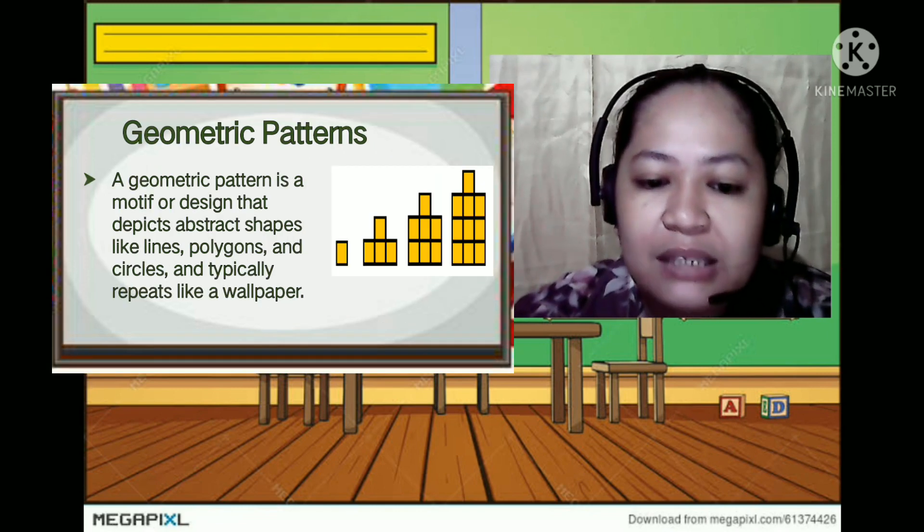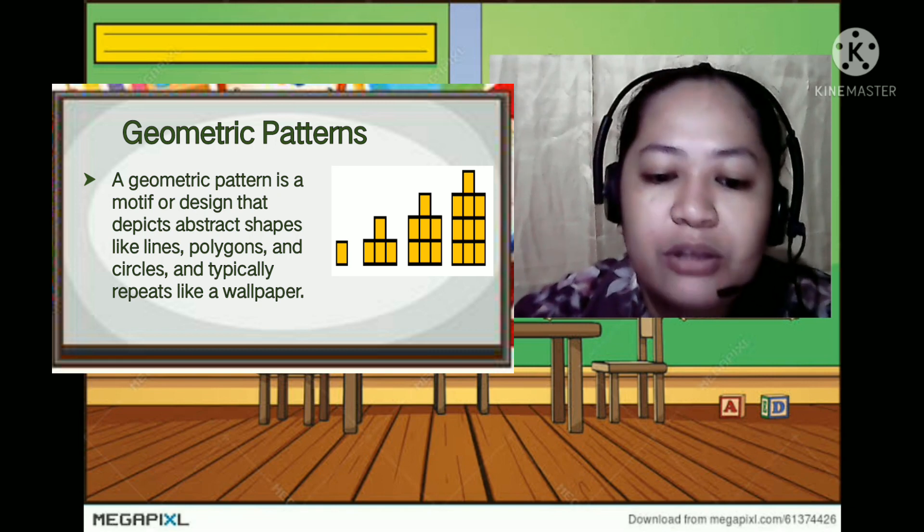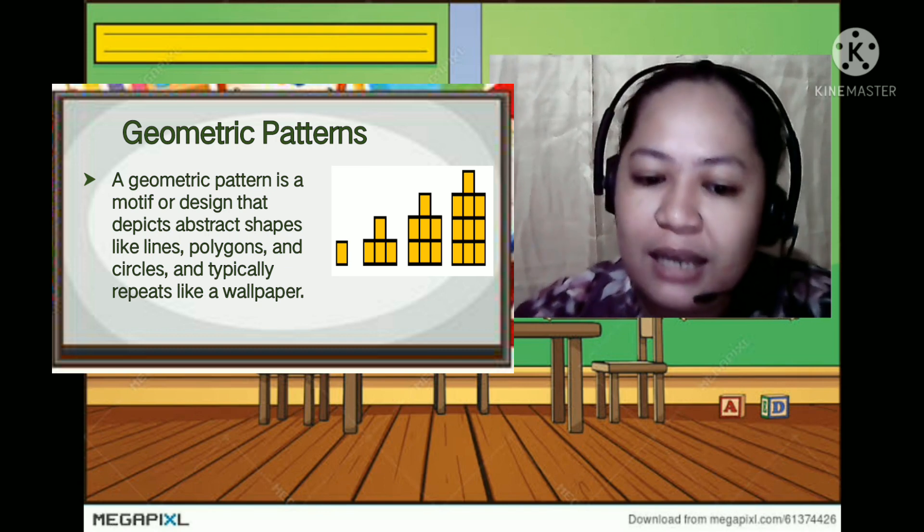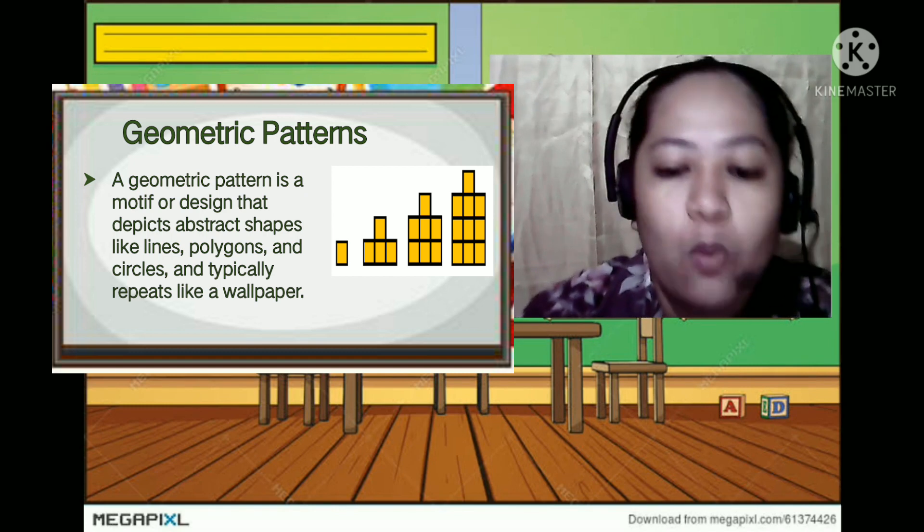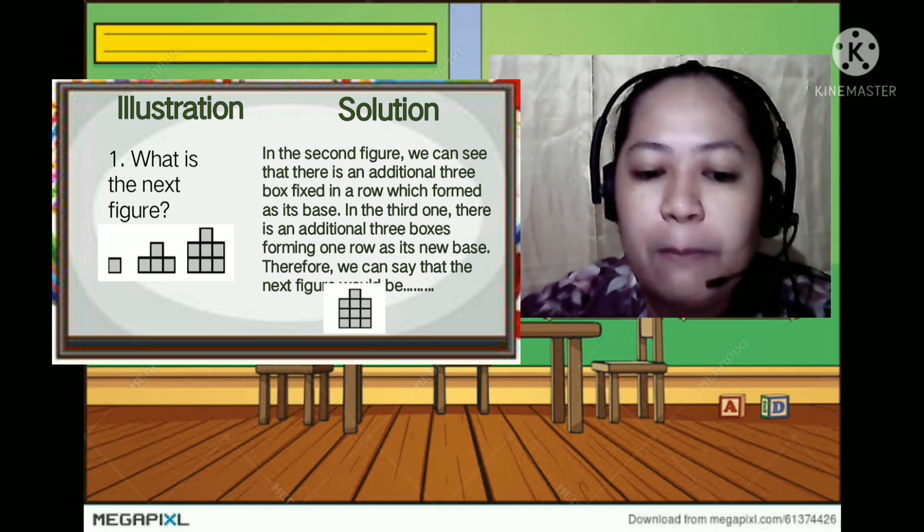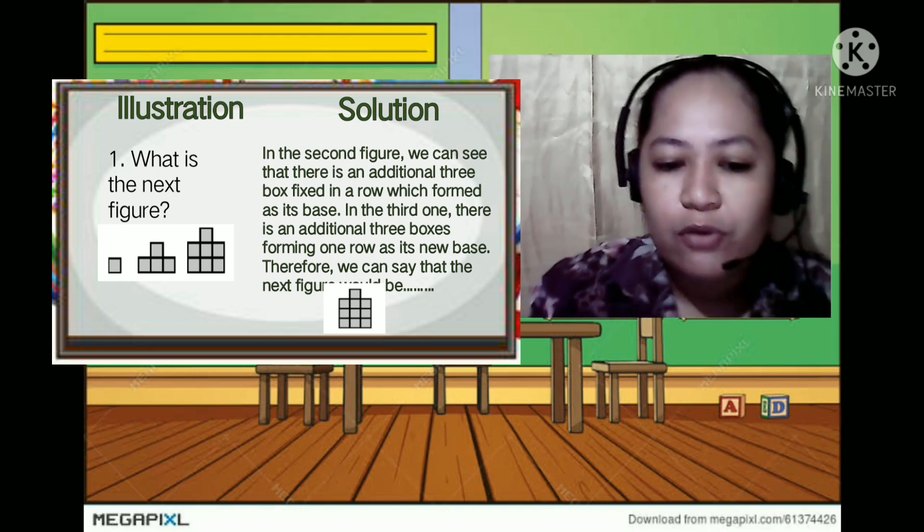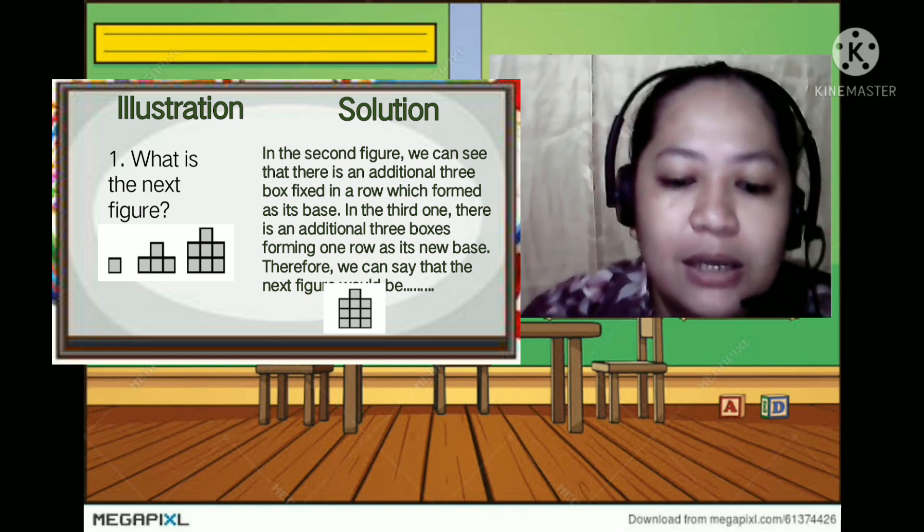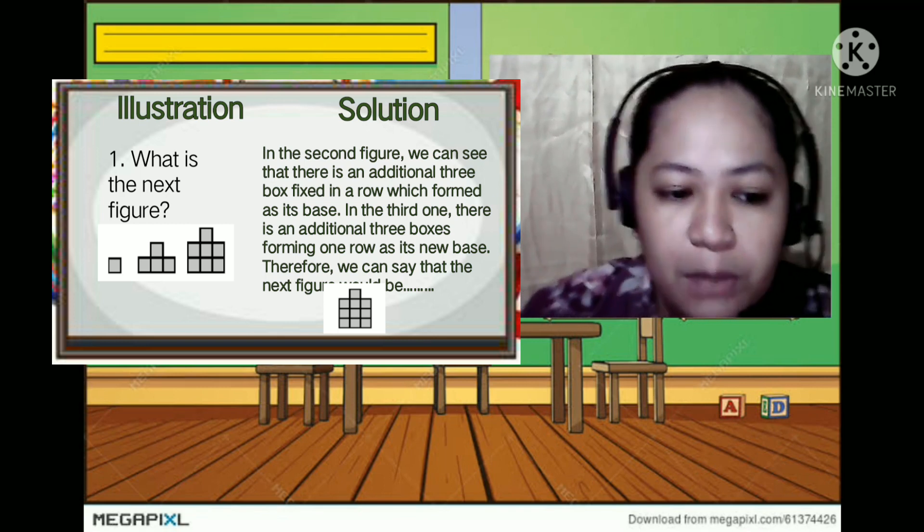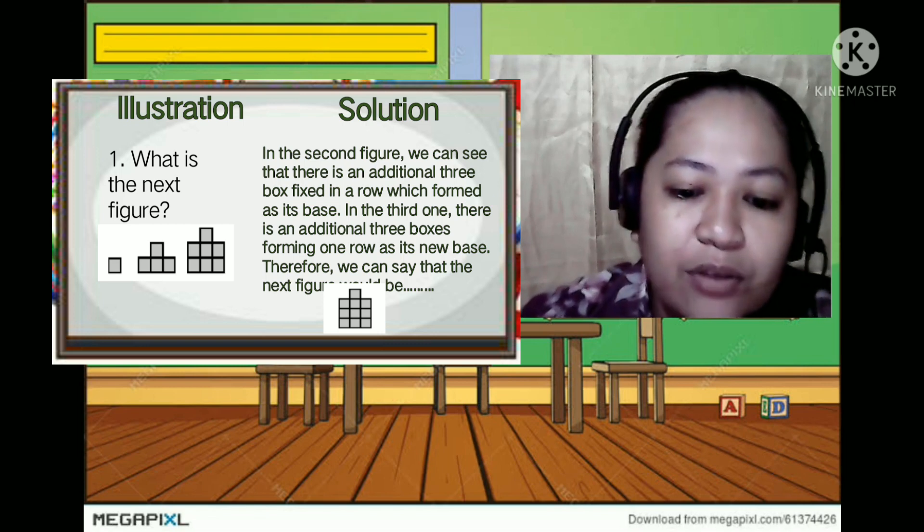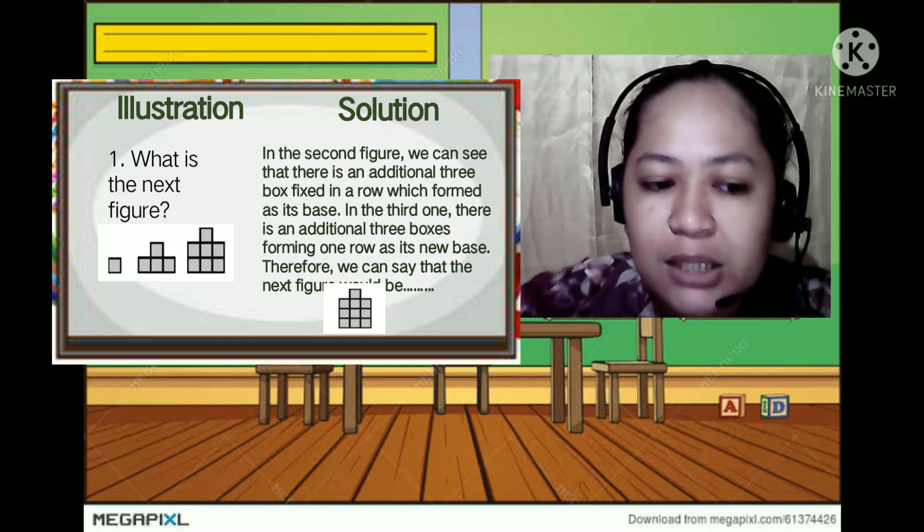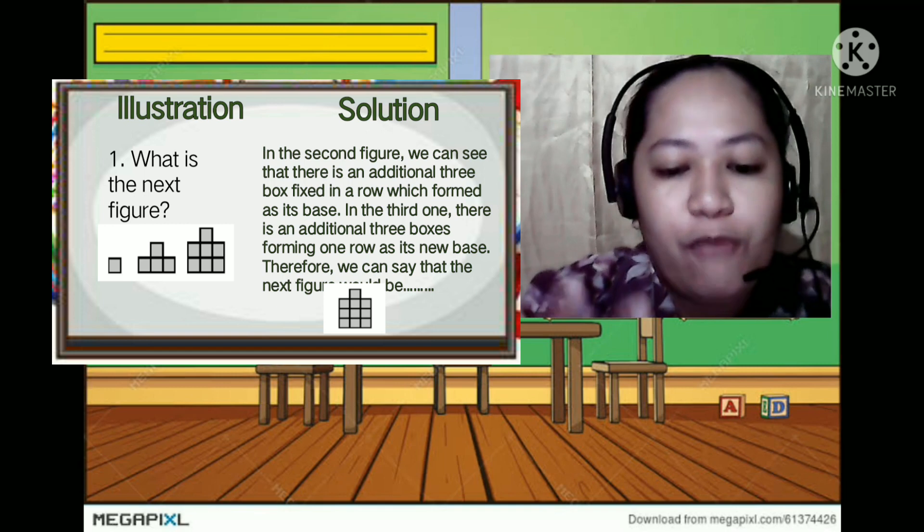And then next is geometric patterns. Geometric pattern is a motif or design that depicts abstract shapes like lines, polygons, and circles and typically repeats like a wallpaper. So as you can see here on the example: what is the next figure? So as you can see the first one is just one box and then the next one it added three more boxes as its base. And then on the following one another three boxes is added as its base. So therefore we can say that the next figure would be like this. So we will be adding another three boxes on the next layer to become its base.